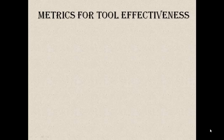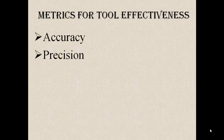Coming back to the metrics. Accuracy is the ratio of correct classifications over the total number of observations. Say we have x correct classifications and y observations, then accuracy equals x over y. Precision looks very similar to accuracy but it is not the same. Precision is the ratio of true positives over the total number of reported errors.